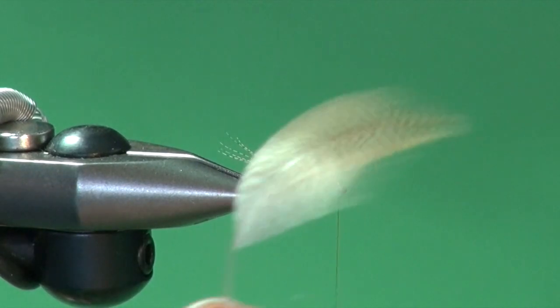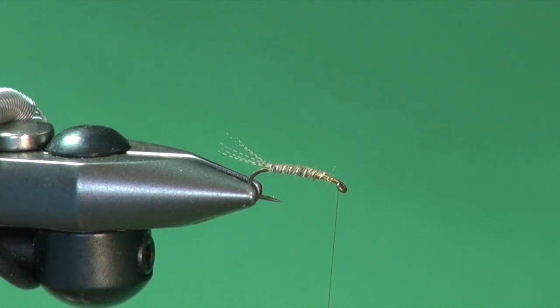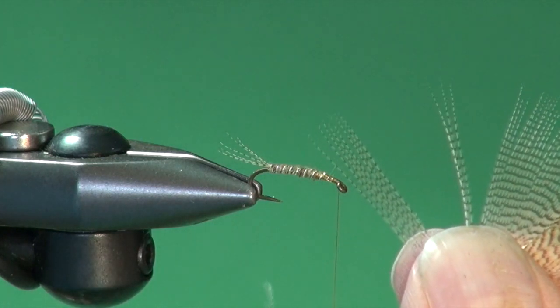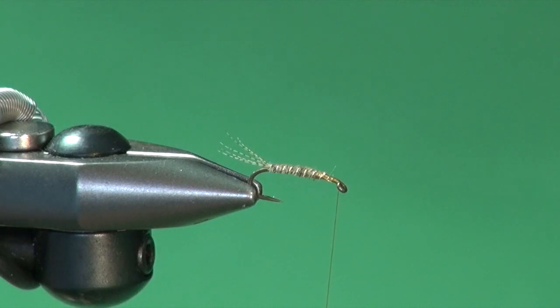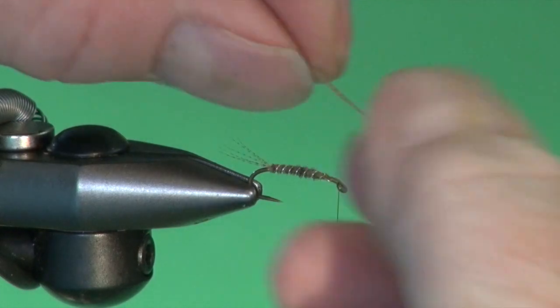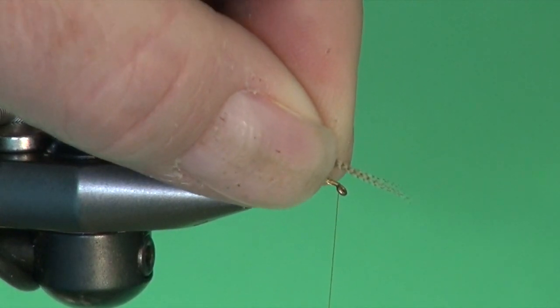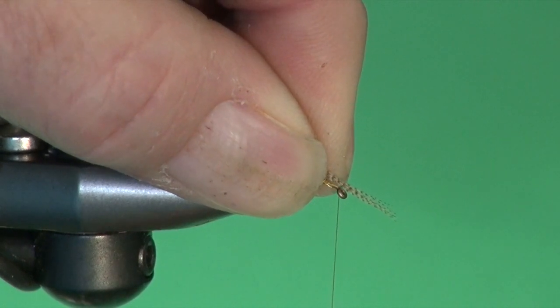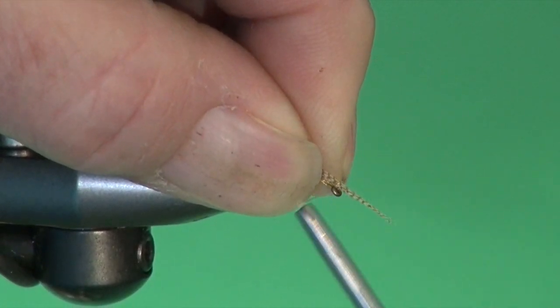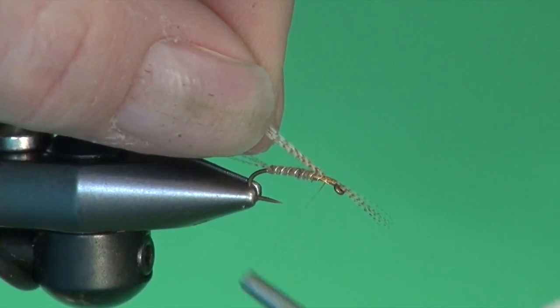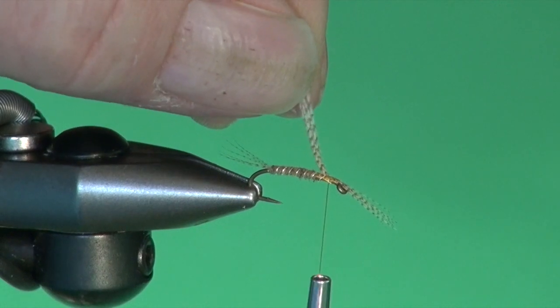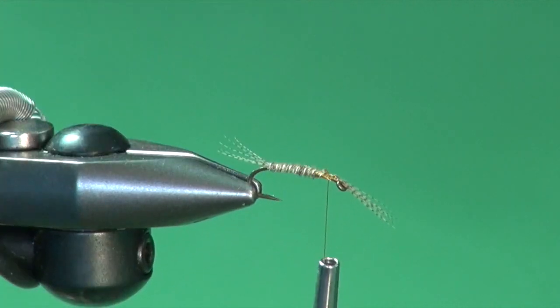We're going to take some more of our wood duck to make legs out of this. I'm going to take off a reasonable slip of wood duck, maybe roughly eight or ten fibers. We're going to strip them from the stem, reposition them. I'm going to tie them in place so the tips protrude out over top of the hook approximately half to three quarters of the shank. Secure those in place and trim away the butts.